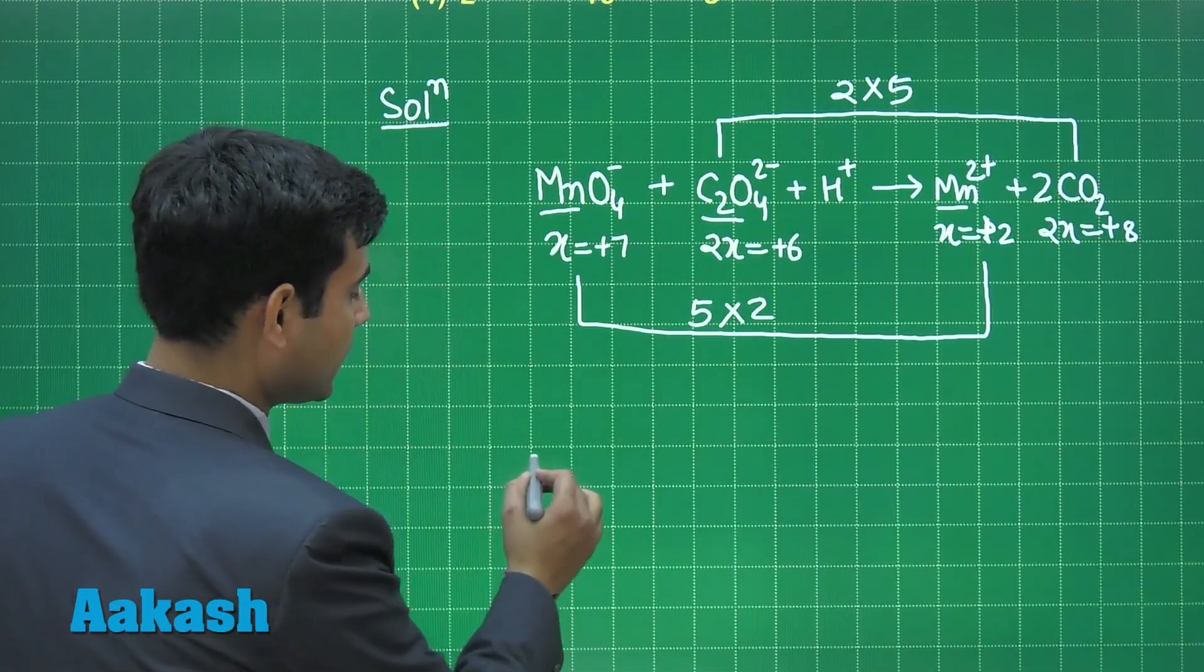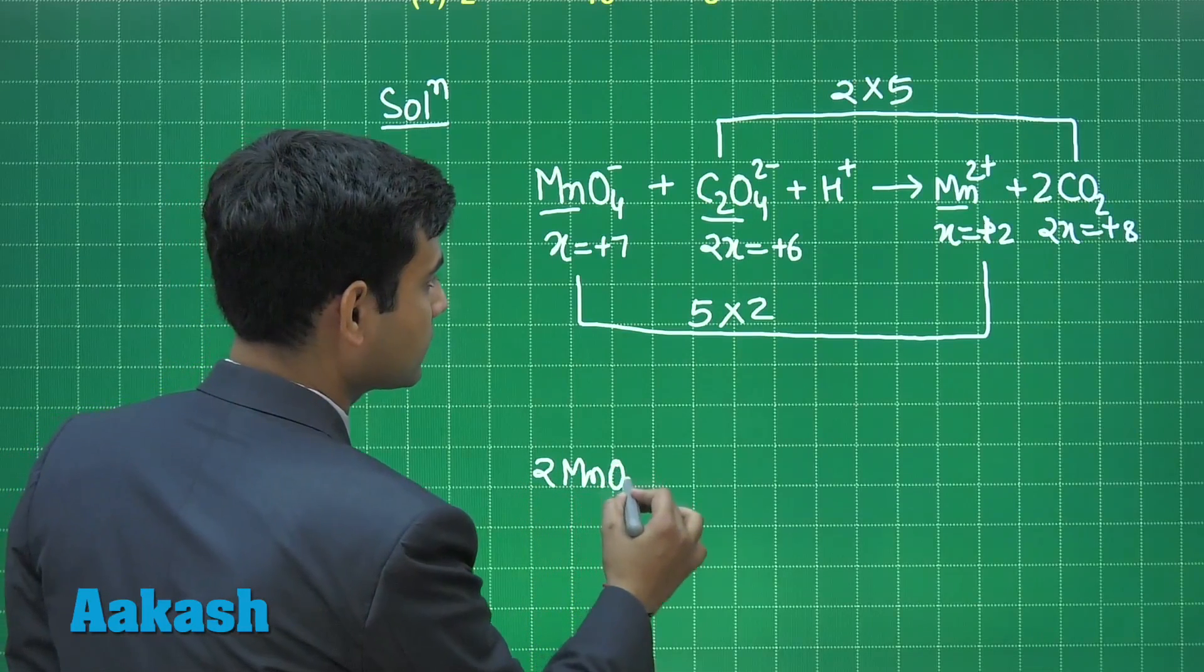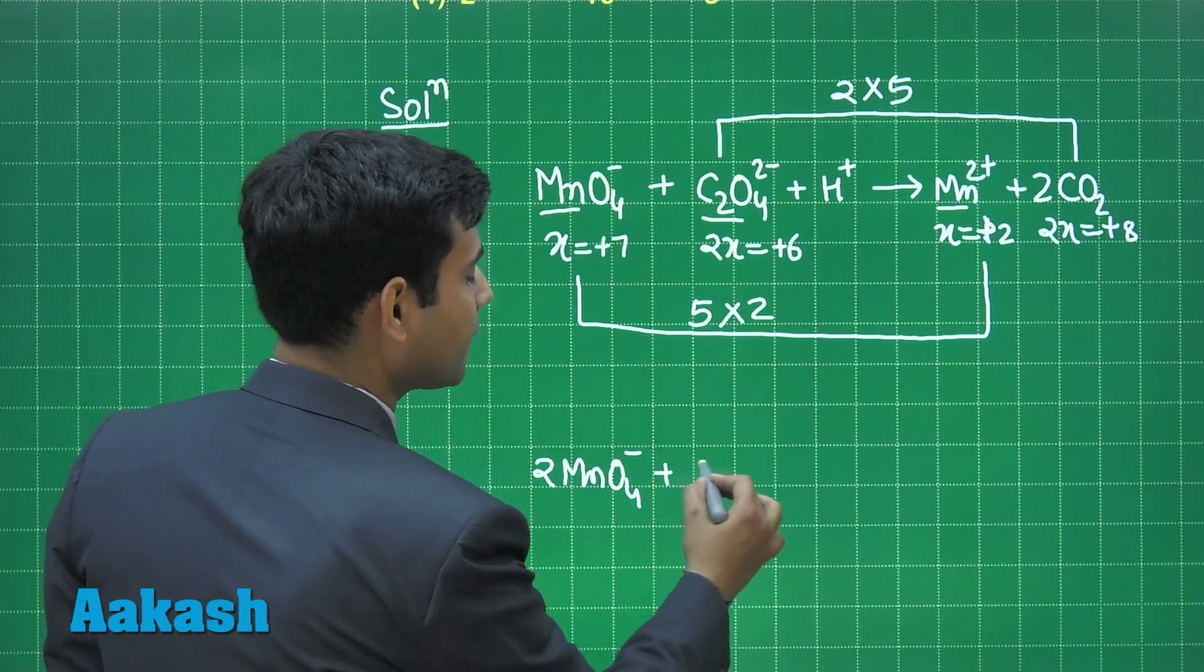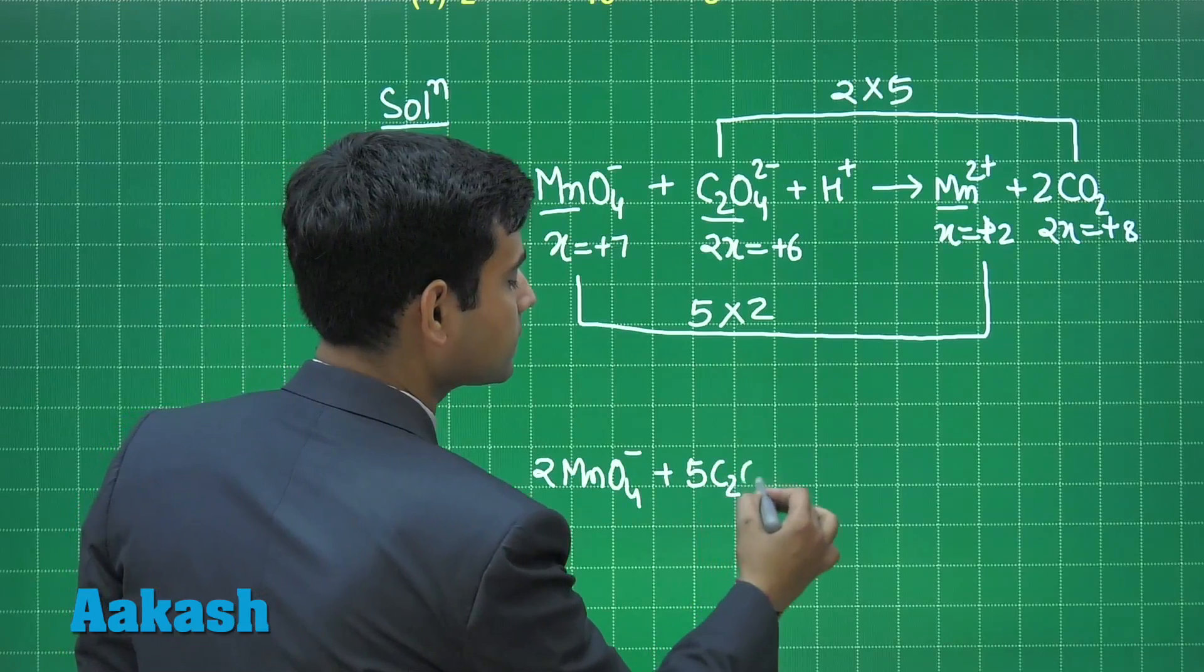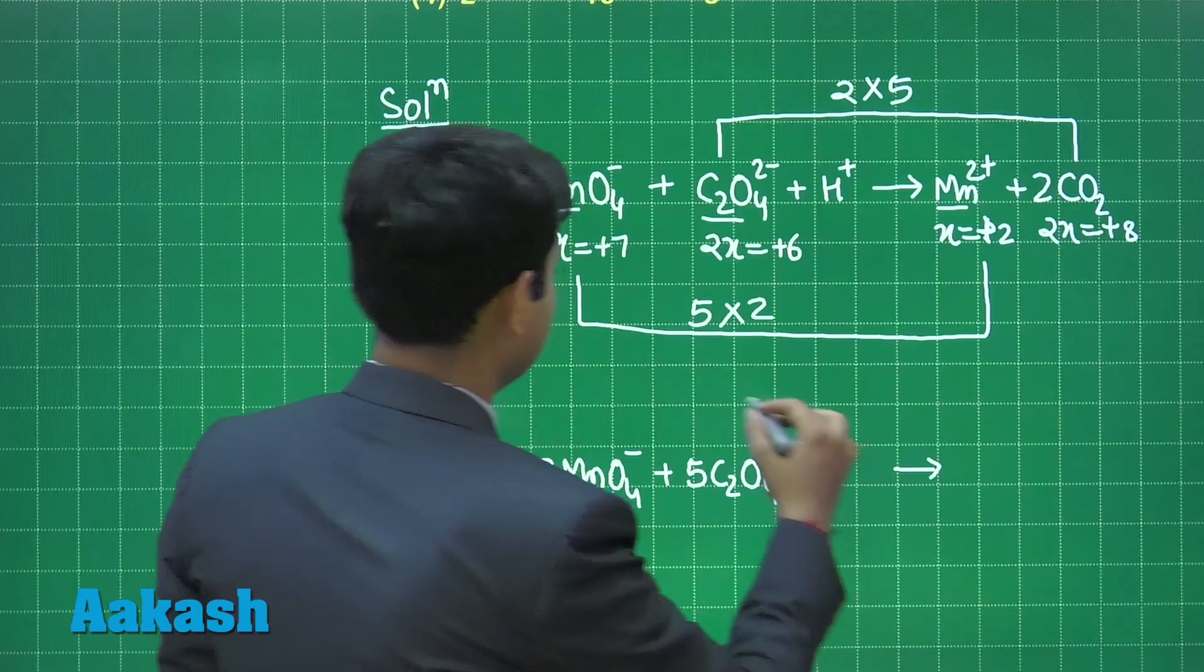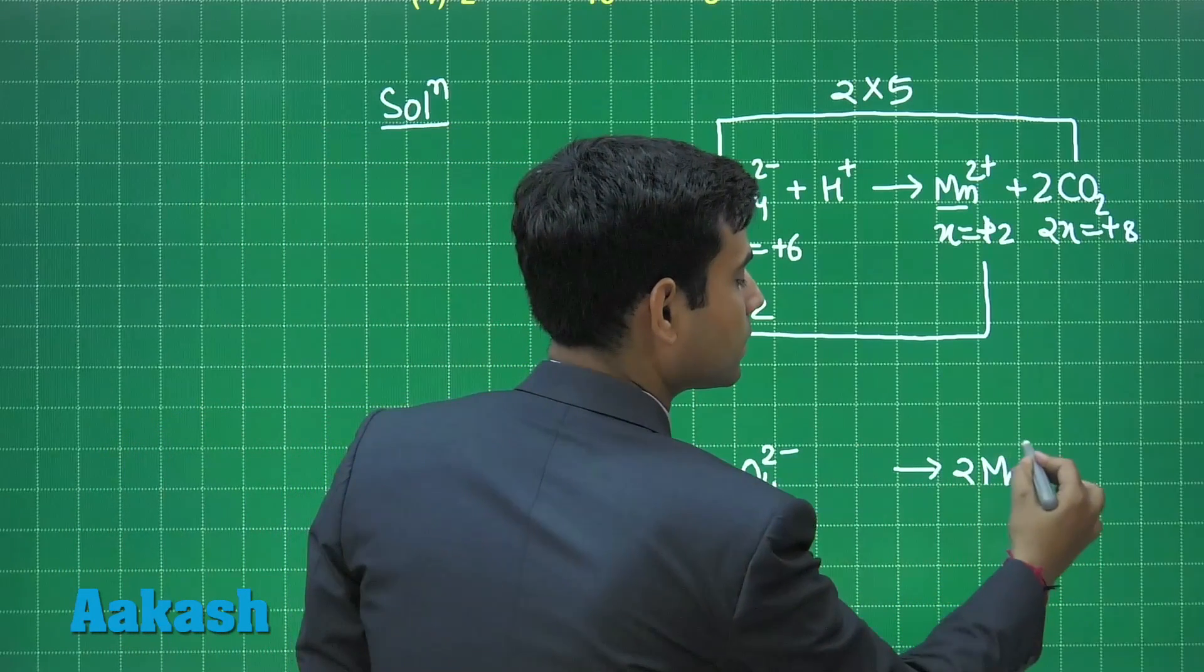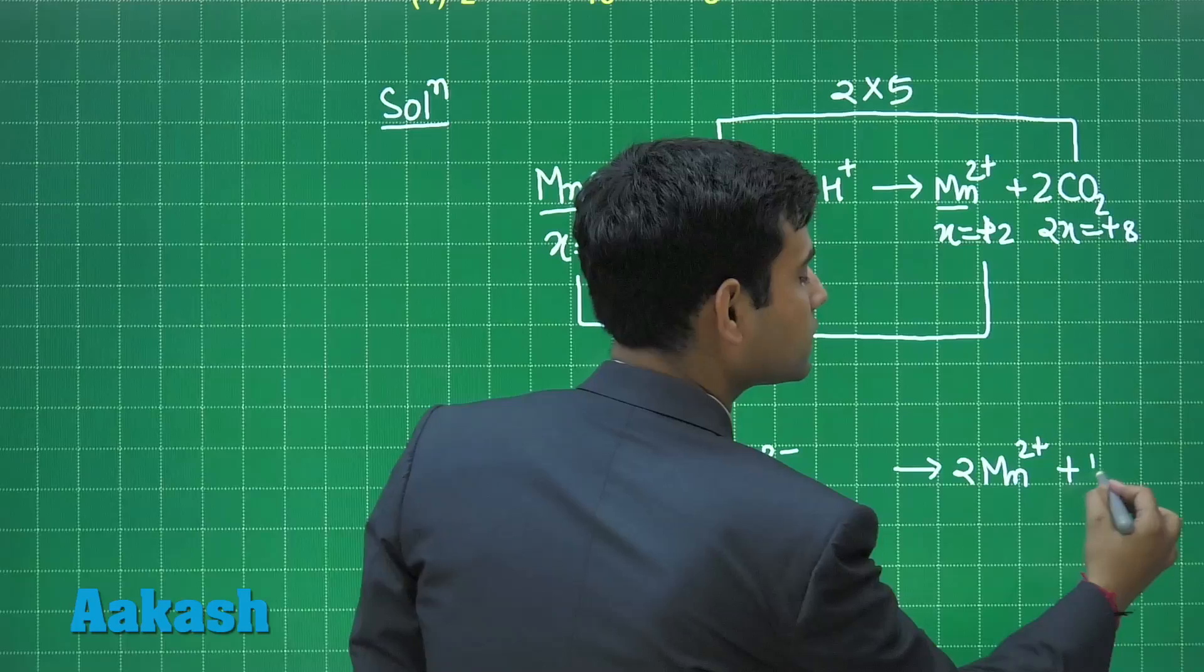We can write this equation as 2 times of permanganate MnO4 minus plus 5 times of C2O42 minus gives us 2 times of Mn2 plus plus 10 times of CO2.